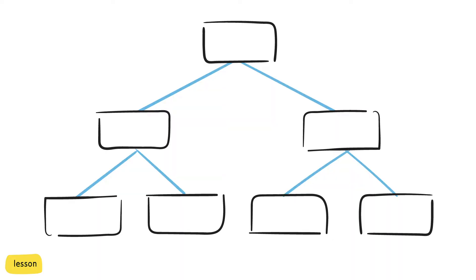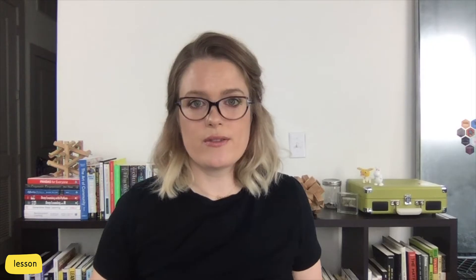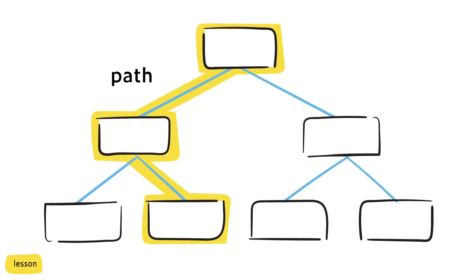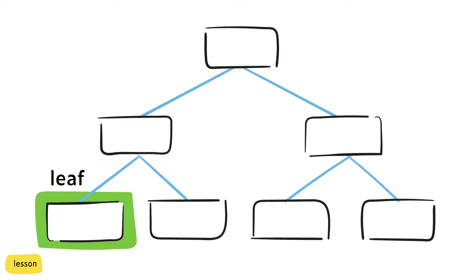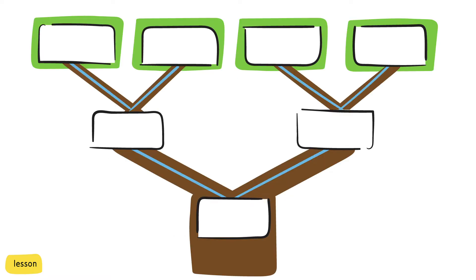Each major decision happened at what we call a node and resulted in a split. The split is the result of something like a yes or no question — like, do I want fruit in my pancakes? Or a split can be the result of a numerical value, like the ratio of all-purpose flour to buckwheat flour. As we trace a path through the decision tree, we ultimately get to the end of the tree in something we call a leaf. This doesn't necessarily look a lot like a tree, so let's flip it over so we can see the resemblance.